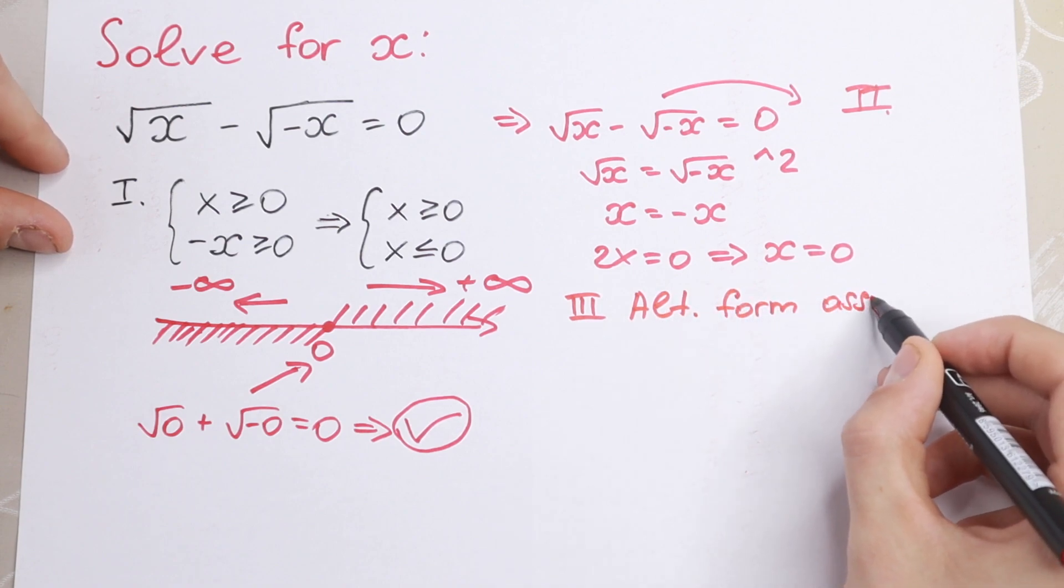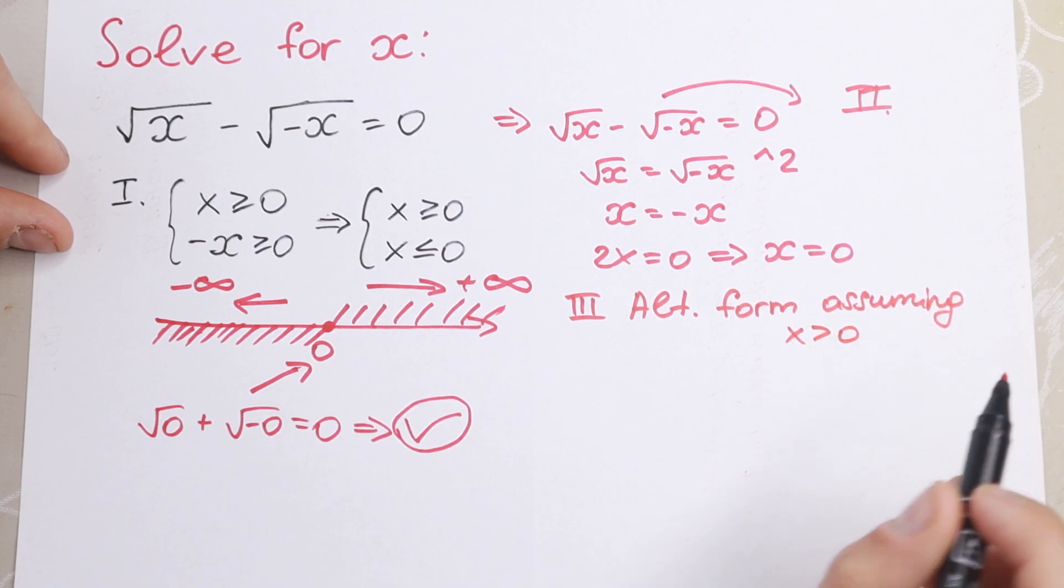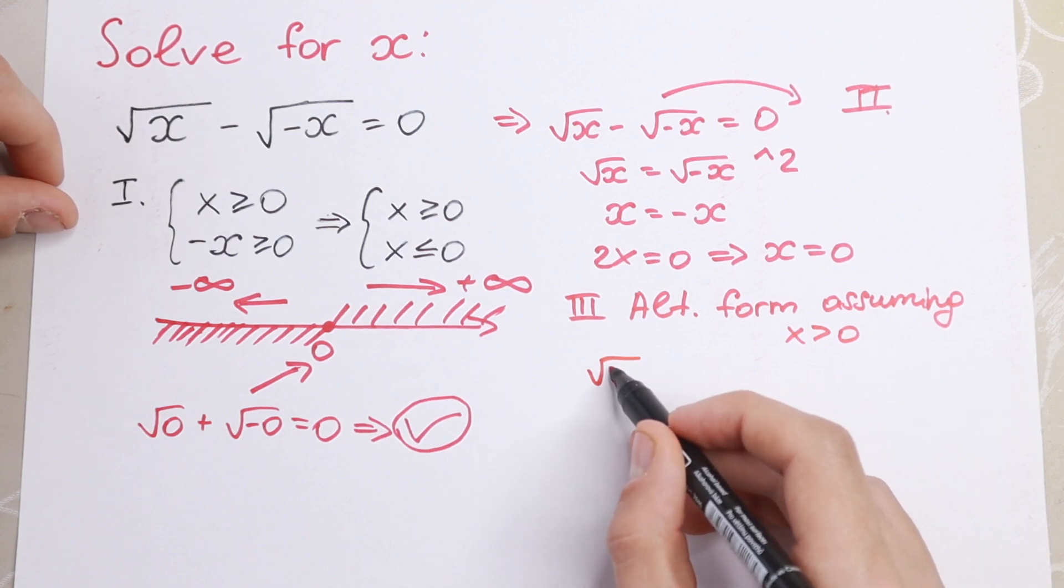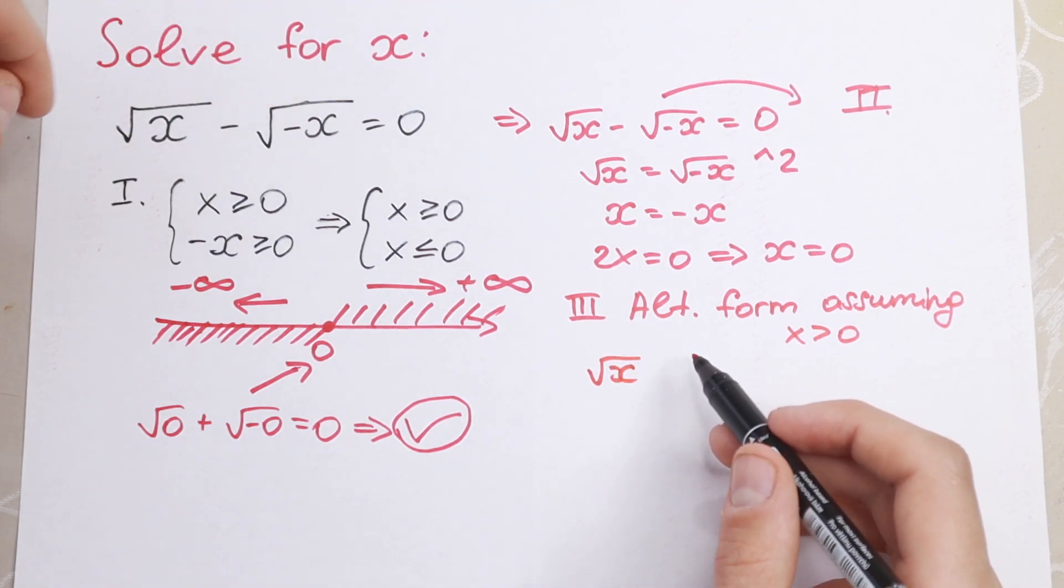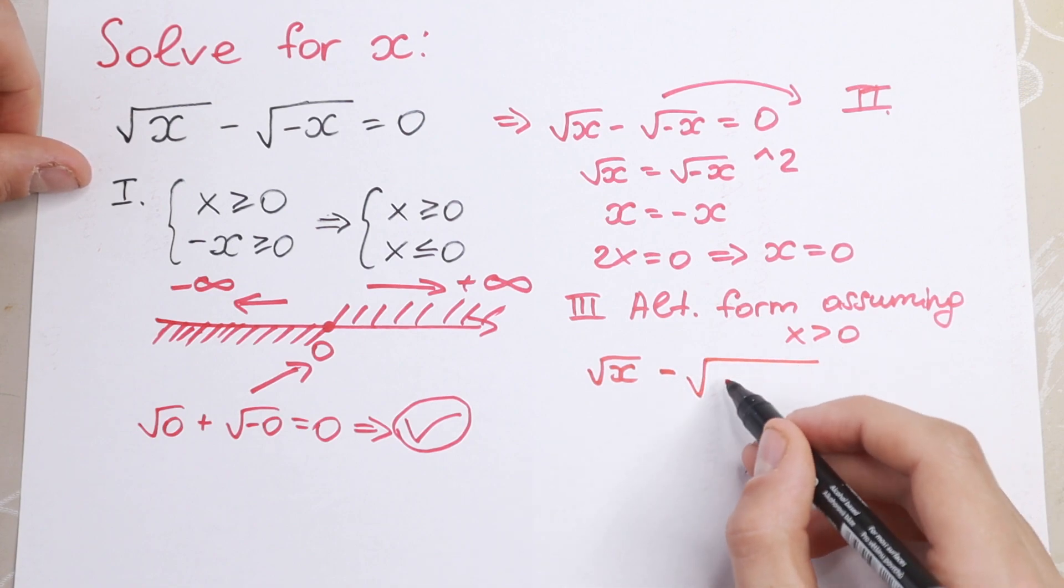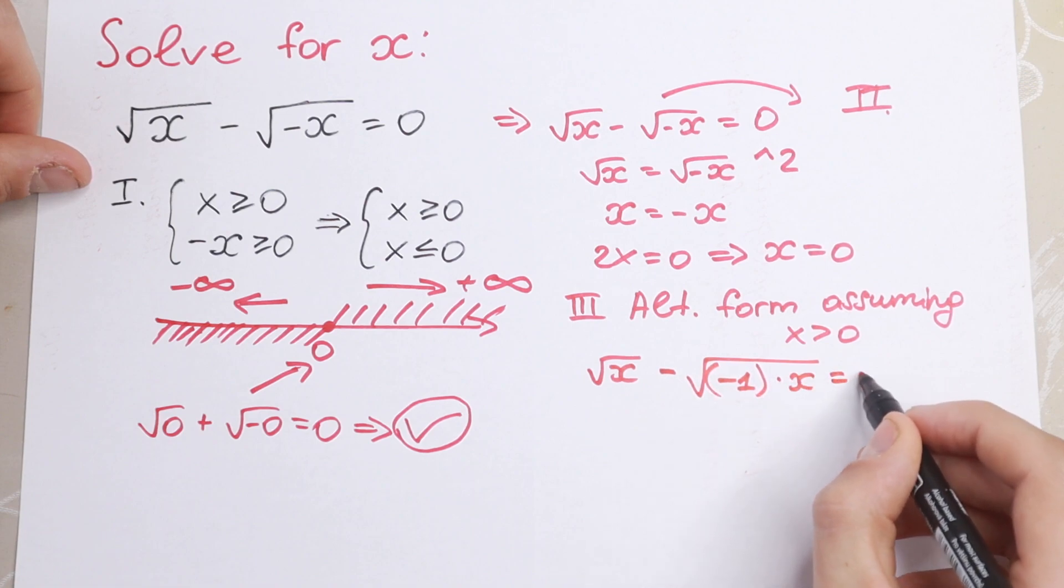So if x is positive, the first square root is good, square root of x. But if x is positive, we will have a really good case, because we can write this minus as minus 1 times x equal to 0.